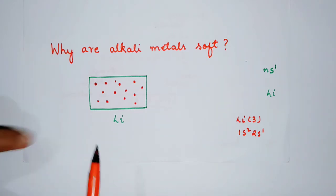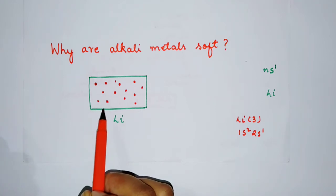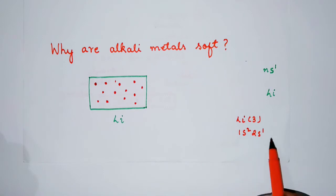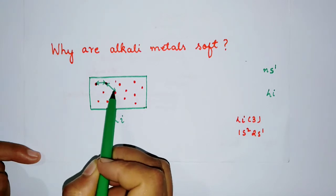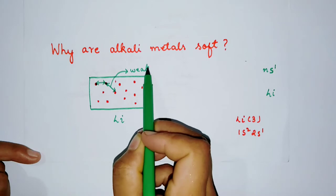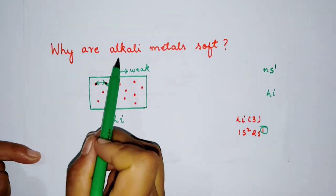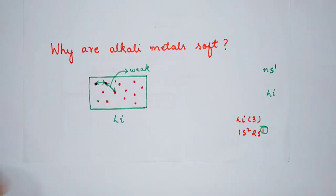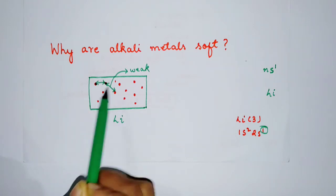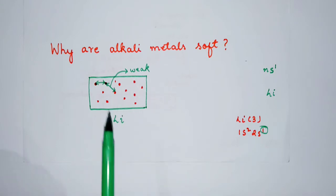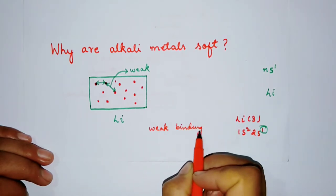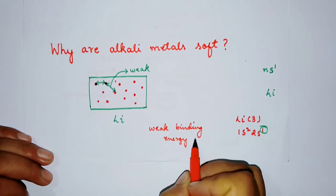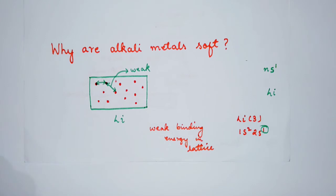Have a look at this diagram. Suppose this is the lithium element — inside it we have many lithium atoms. Because there is only one electron in the outermost shell, the metallic bonding between the atoms in the alkali metals will be very weak. Hence, they have a weak binding energy in their lattice.